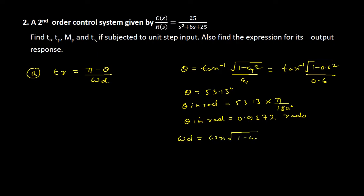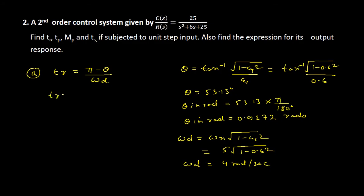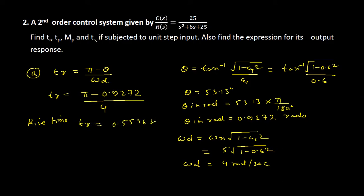Now we find the damped frequency of oscillation: omega_d equals omega_n times sqrt(1 minus zeta squared). Substituting omega_n equals 5 and zeta equals 0.6, we get 5 times sqrt(1 minus 0.36), which gives omega_d equal to 4 radians per second. Putting all values into the rise time formula, tr equals (pi minus 0.9272) divided by 4, giving rise time tr equal to 0.5536 seconds.